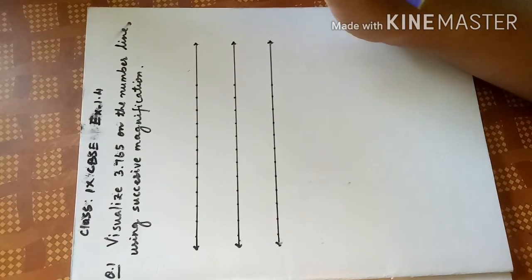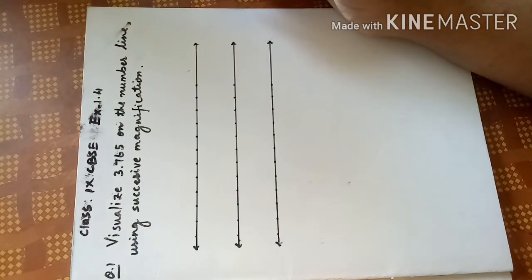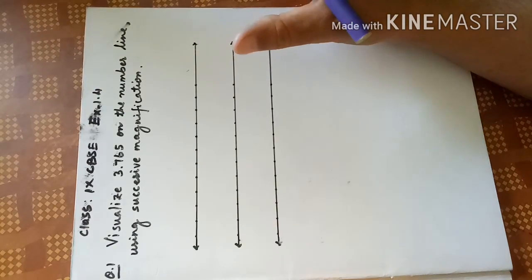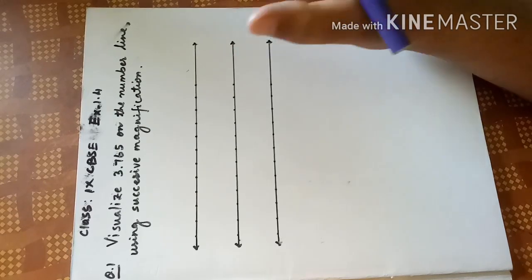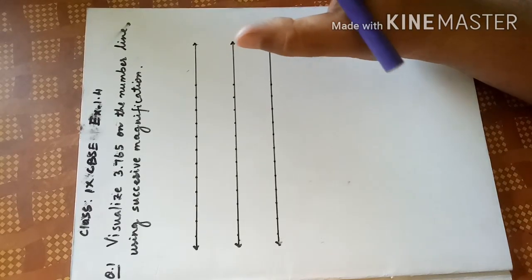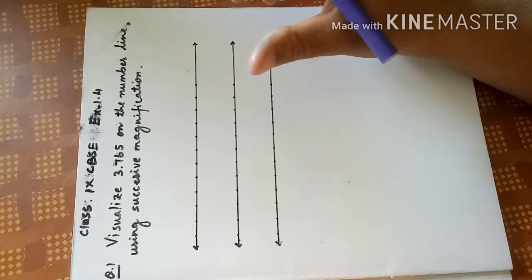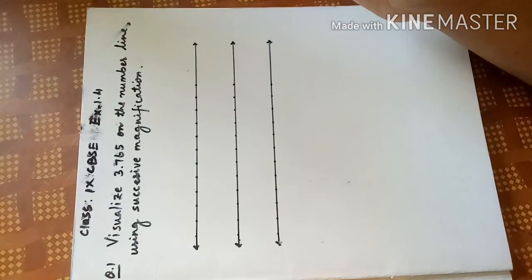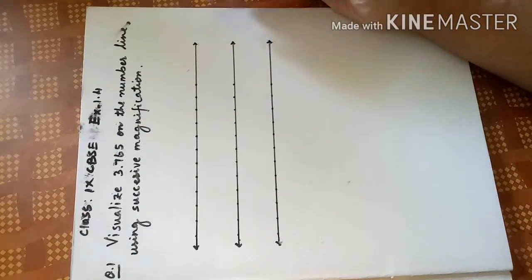Visualize 3.765 on the number line using successive magnification. So one real number is given here, 3.765. We have to visualize, we have to find out where is 3.765 on the number line by using successive magnification. What you are going to do is...